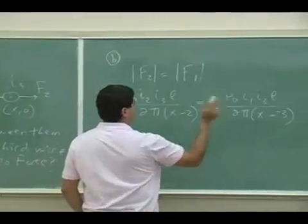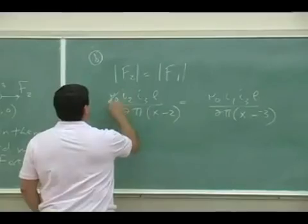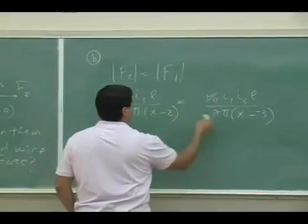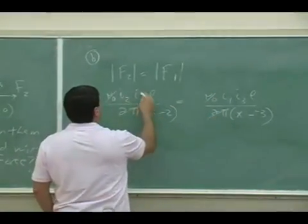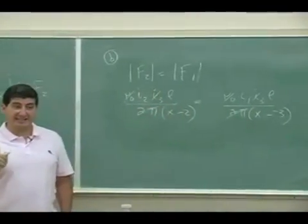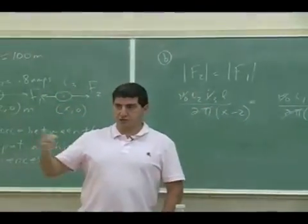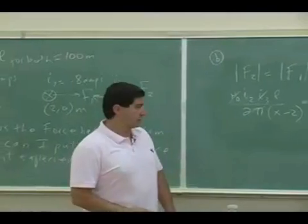So a bunch of things should cancel now. μ₀ should cancel, 2π should cancel, I₃ should cancel. So it should not depend on the current of that wire, which is exactly right.